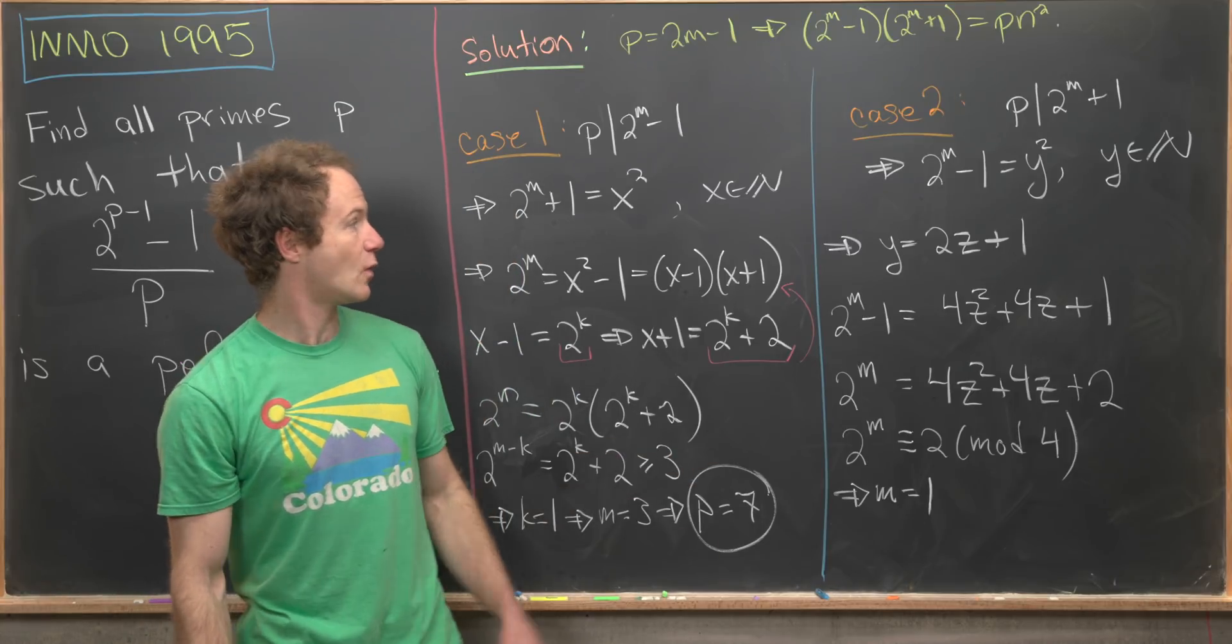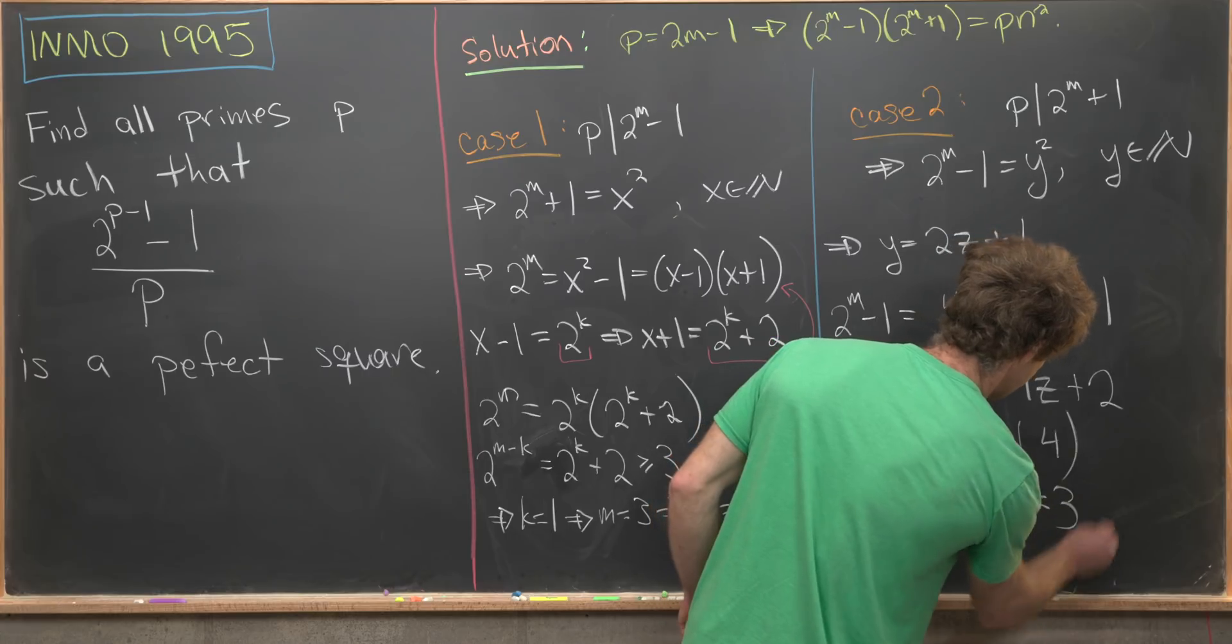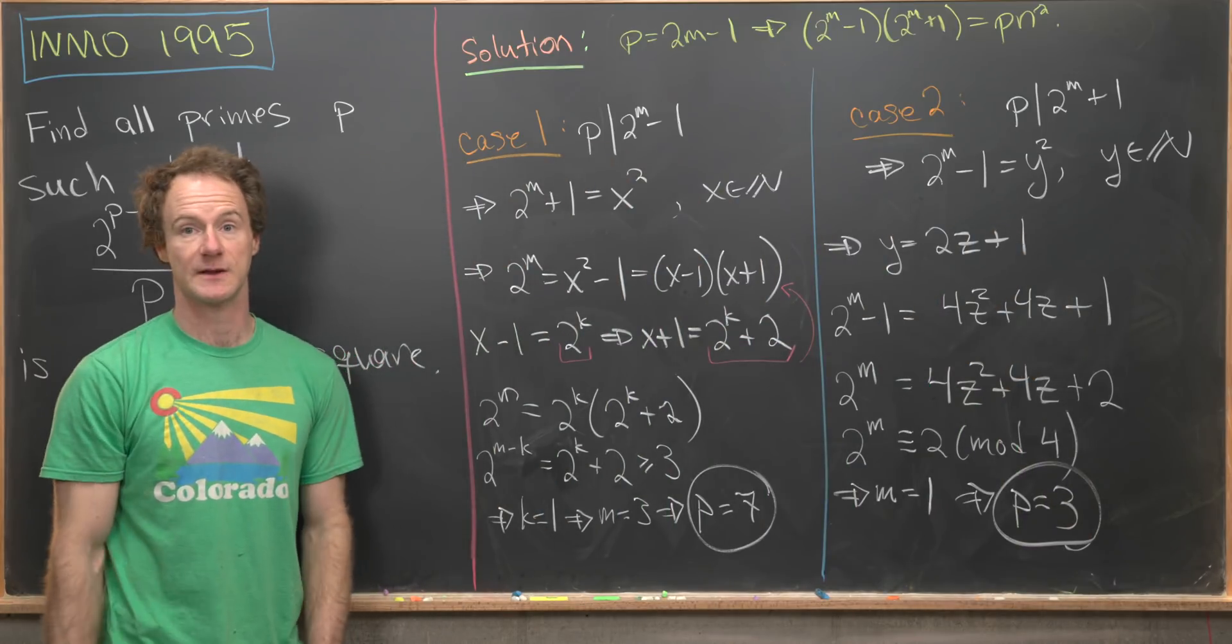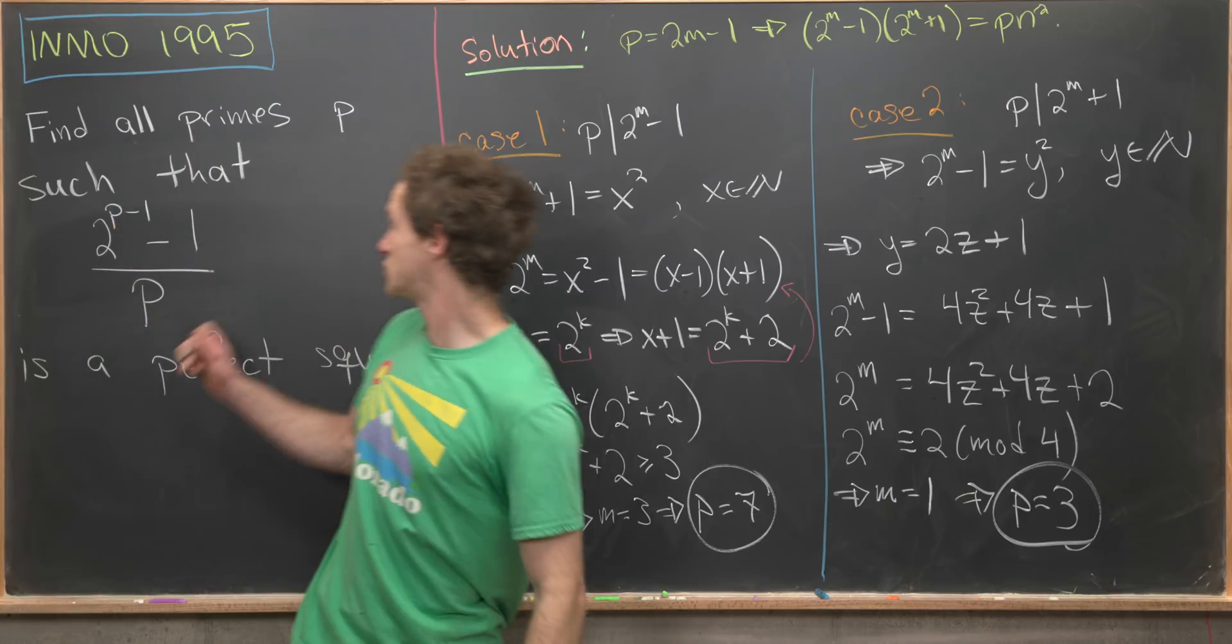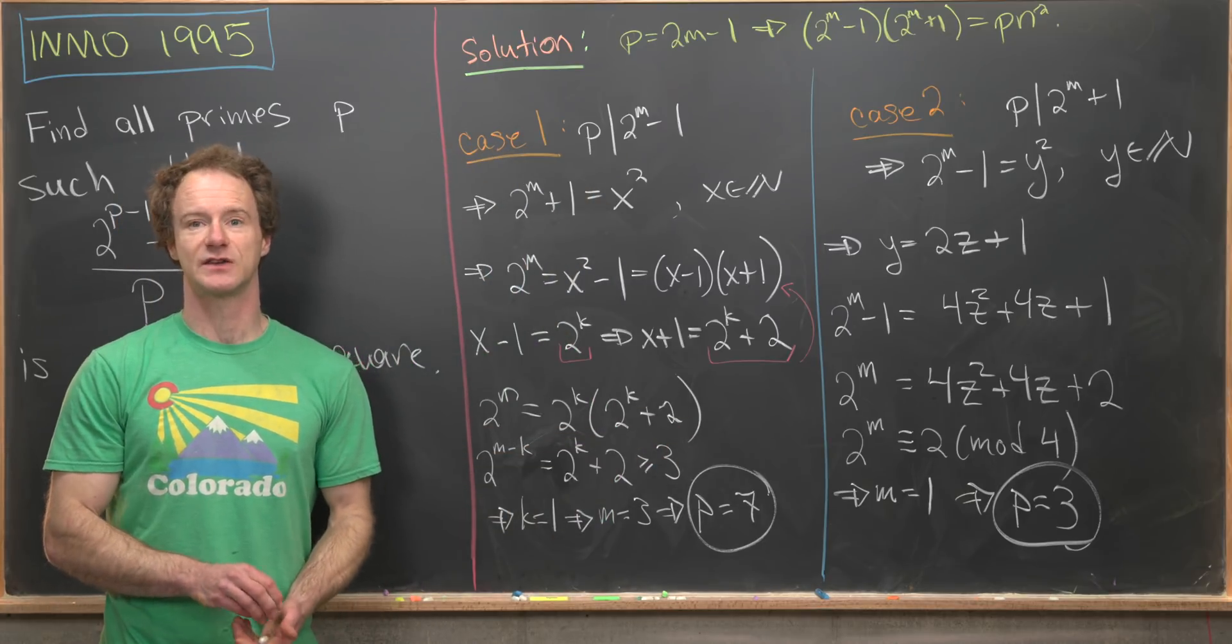But if m is equal to 1, that tells us that the prime we are interested in, in this case, is the prime p = 3. So we've got two solutions for this problem. We've got p = 3 and p = 7. And that's a good place to stop.